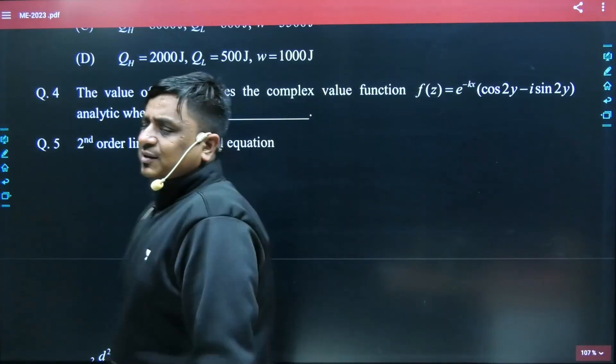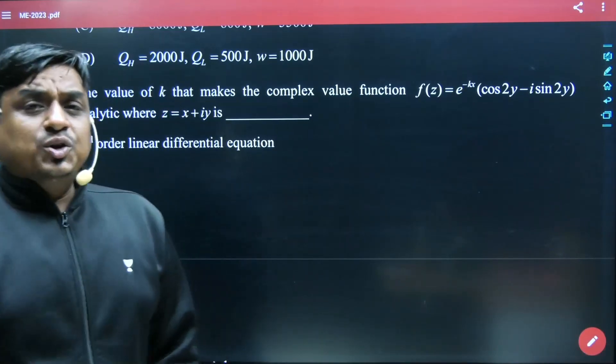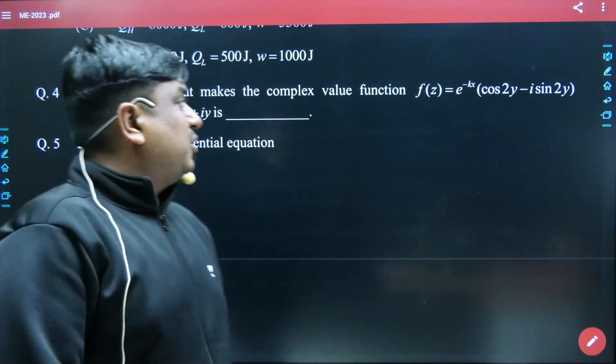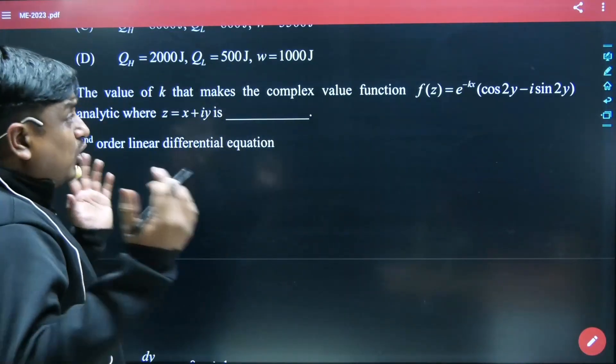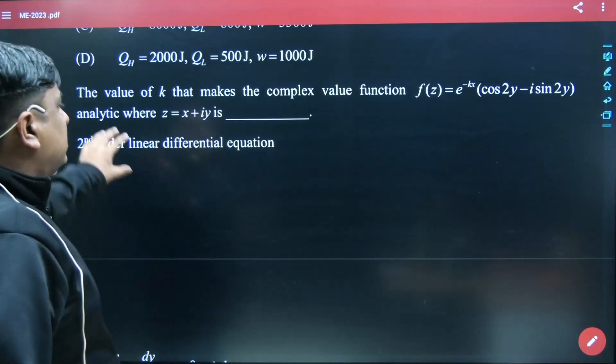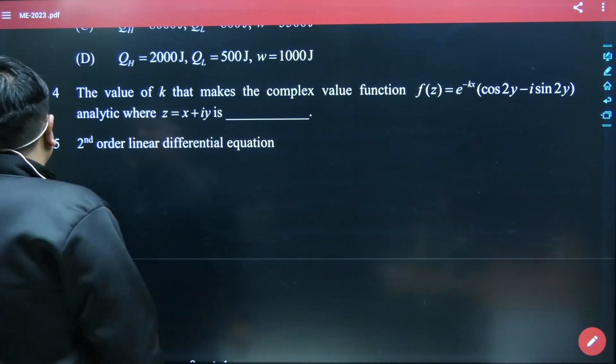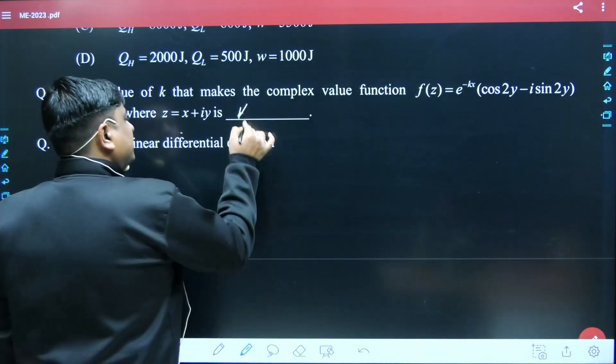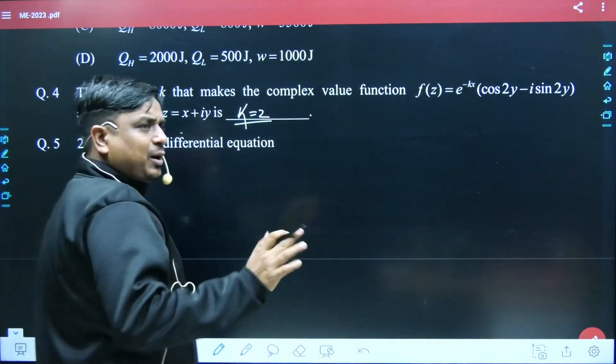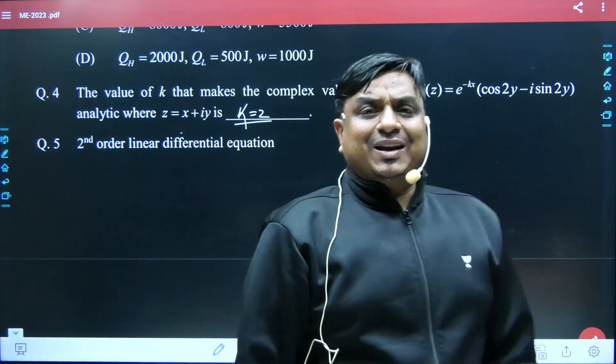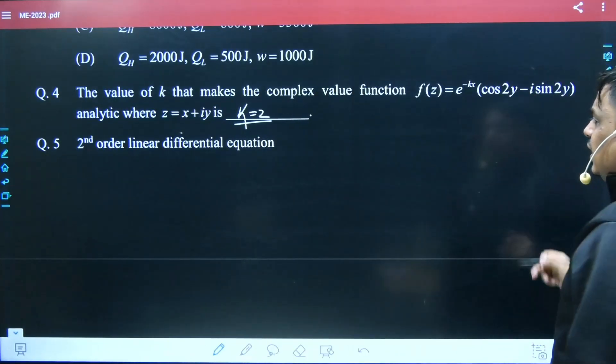If u(x) equals v(y) and u(y) equals minus v(x), the given complex function used to be analytic in nature. Taking reference of that concept, you need to find the value of k. You can expect this kind of question. I won't say this question would get repeated, but complex variables have always been an important topic for electrical and electronics.